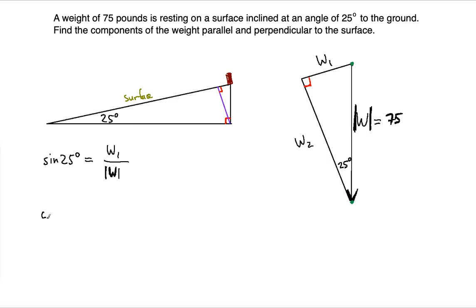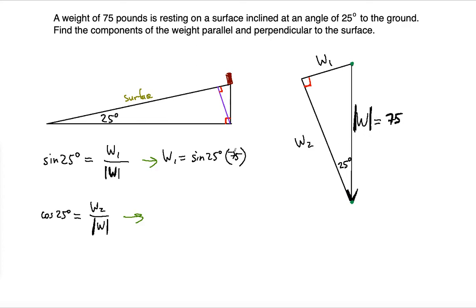And cosine of 25 is the adjacent side, which is W2, divided by the hypotenuse. So now that we have those relationships, we can solve for the components. W1 is equal to sine of 25 times the weight of 75 pounds, and W2 is equal to cosine of 25 times 75 pounds — the magnitude of the weight vector.